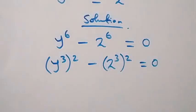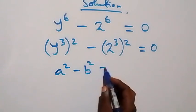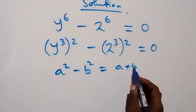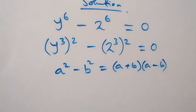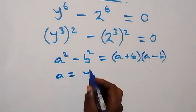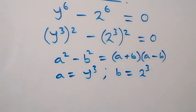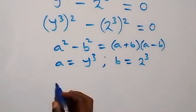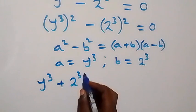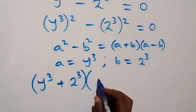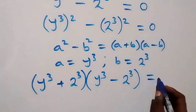This equals to zero. This follows from when we have a squared minus b squared, which can be written as (a + b)(a - b). Here a is y raised to power 3 and b is 2 raised to power 3. So what we have becomes: (y³ + 2³)(y³ - 2³) equals to zero.